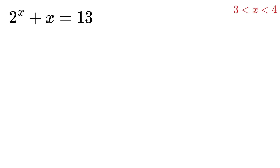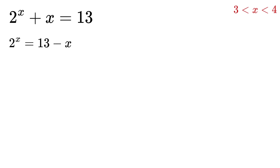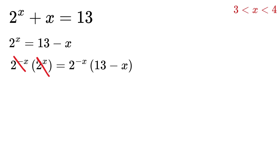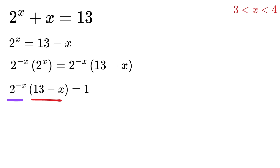Now to solve it algebraically, take x to the right-hand side to get 2 raised to x equals 13 minus x. Now multiply both sides by 2 raised to the power minus x. This will cancel out the left-hand side and become 1, leaving us with 2 raised to minus x times 13 minus x equals 1. Now rewrite this as minus x plus 13, multiplied by 2 raised to the power minus x.